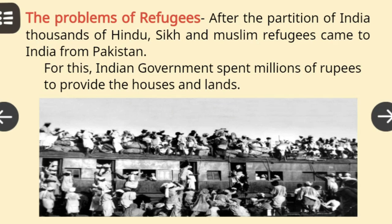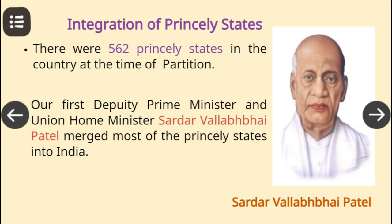The next problem was the integration of the princely states with the Indian Union. There were 562 princely states in the country at the time of partition. Our first deputy prime minister, Sardar Vallabhai Patel, the then union home minister, merged most of the princely states into India with great insight.